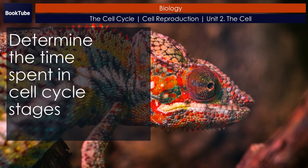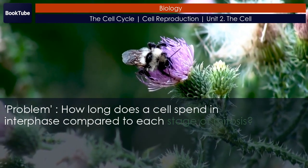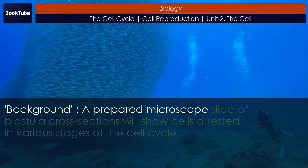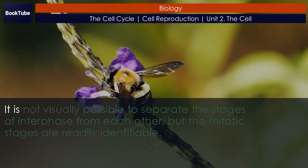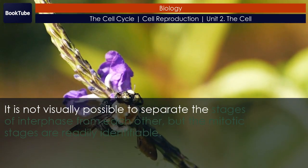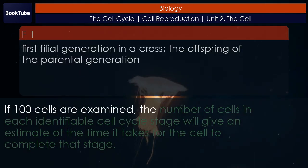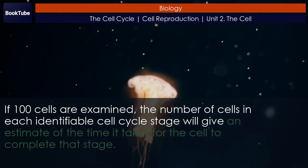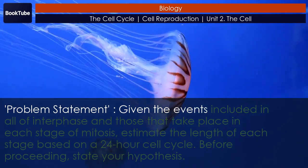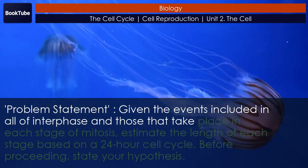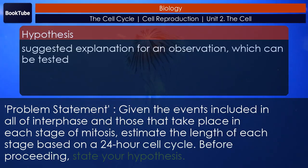Scientific Method Connection: Determine the time spent in cell cycle stages. Problem: How long does a cell spend in interphase compared to each stage of mitosis? Background: A prepared microscope slide of blastula cross sections will show cells arrested in various stages of the cell cycle. It is not visually possible to separate the stages of interphase from each other, but the mitotic stages are readily identifiable. If 100 cells are examined, the number of cells in each identifiable cell cycle stage will give an estimate of the time it takes for the cell to complete that stage. Given the events included in all of interphase and those that take place in each stage of mitosis, estimate the length of each stage based on a 24-hour cell cycle. Before proceeding, state your hypothesis.